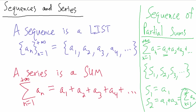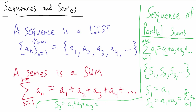Following the pattern, S₃ is a₁ plus a₂ plus a₃, which we can write compactly as the sum from n equals 1 to 3 of a_n. We call this a sequence of partial sums because each element is a partial sum of the series. The full series sums all infinitely many values, but a partial sum stops at some finite point. So S₁ is a₁, S₂ is a₁ plus a₂, S₃ is a₁ plus a₂ plus a₃, and so forth.